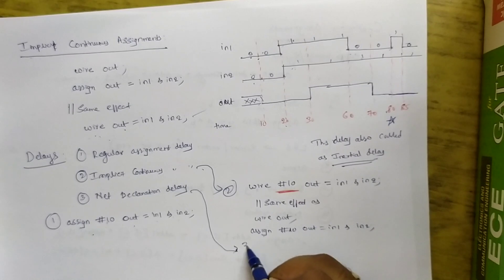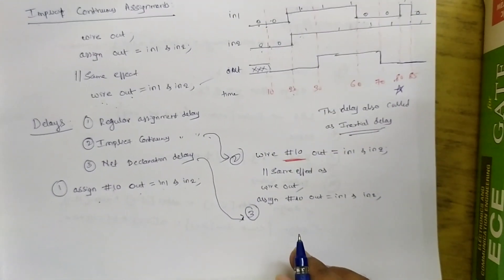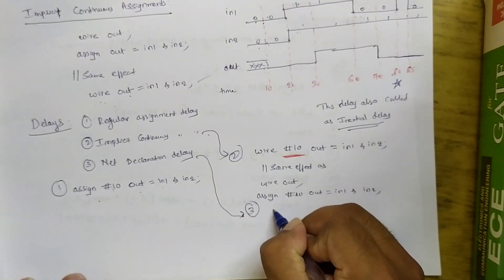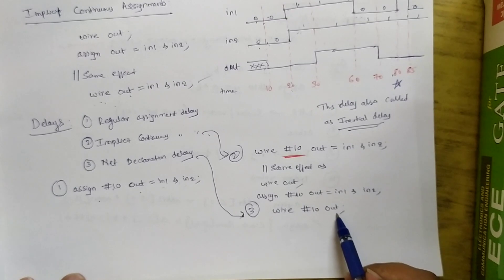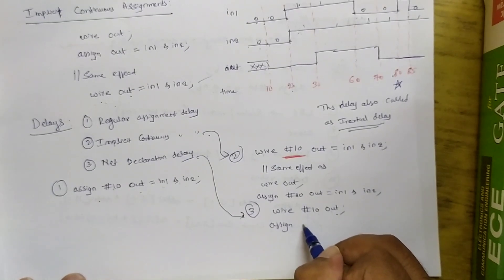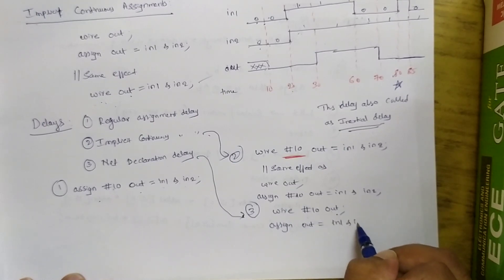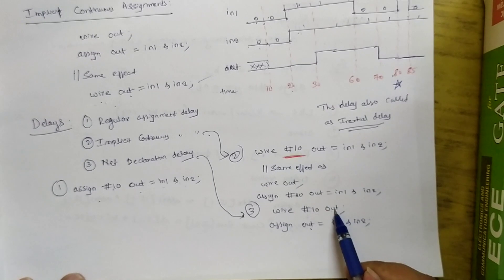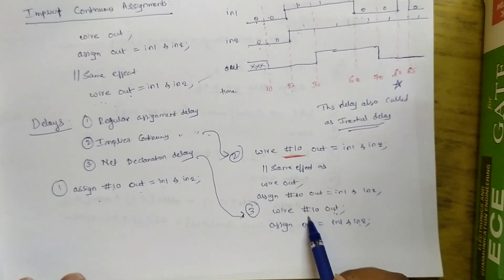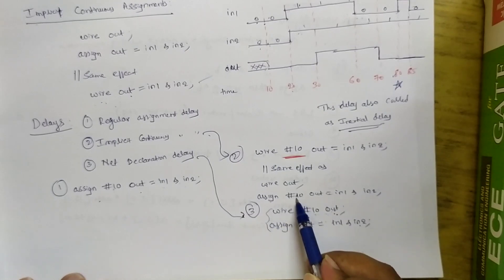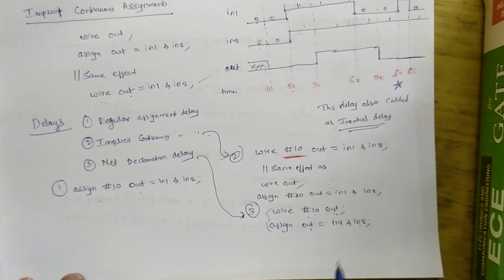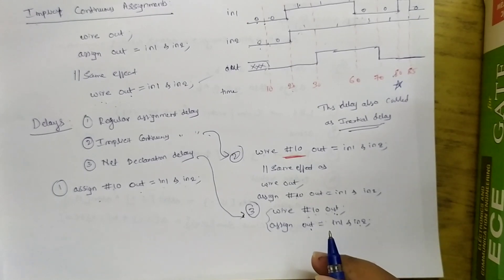The third type is net declaration delay. For example: wire #10 out; assign out = IN1 & IN2; Here, while declaring the output, a 10 time unit delay is defined. Even though no delay unit is used in the assign statement, it is understood that 'out' will get the value of the right-hand side expression only after 10 time units. These two statements have the same effect as the regular assignment delay. This is called net declaration delay. We will continue with the next learning objectives in the next session. Thank you.